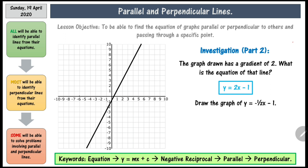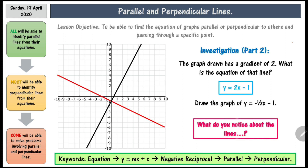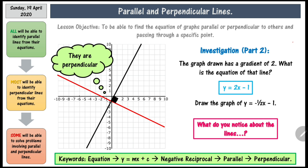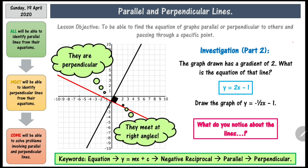Once you draw the line, it should look like this. This line has gone from negative 10 to 10, but you don't have to find all of the coordinates. If your line partially fits — from negative 3 to 3 — this is the area we are focusing on. Now, what do you notice about the two lines? They cross at a right angle, and for that reason, they are known as perpendicular lines.